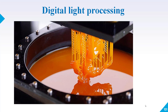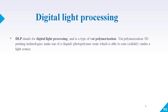In this lecture we will talk about the digital light processing 3D printing process. DLP stands for digital light processing. Basically it is a type of vat polymerization technique. Vat polymerization 3D printing technologies make use of liquid photopolymer resin.